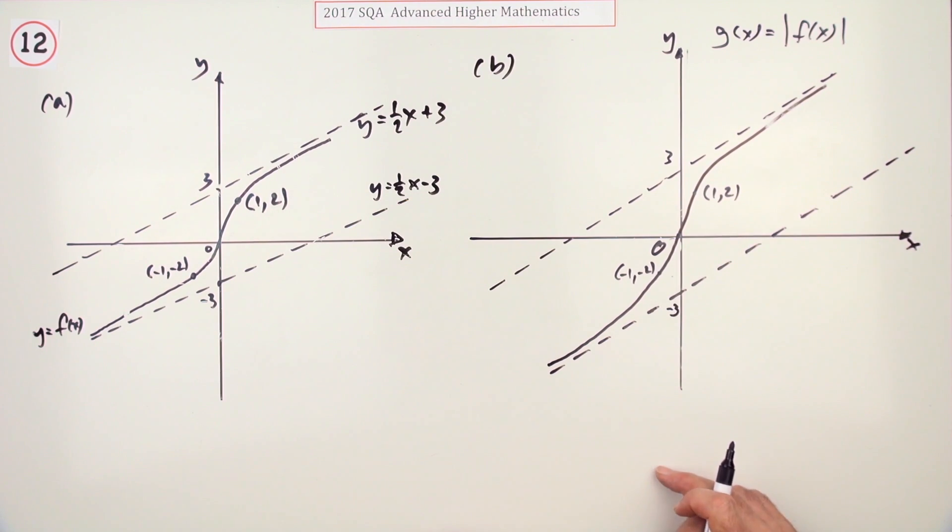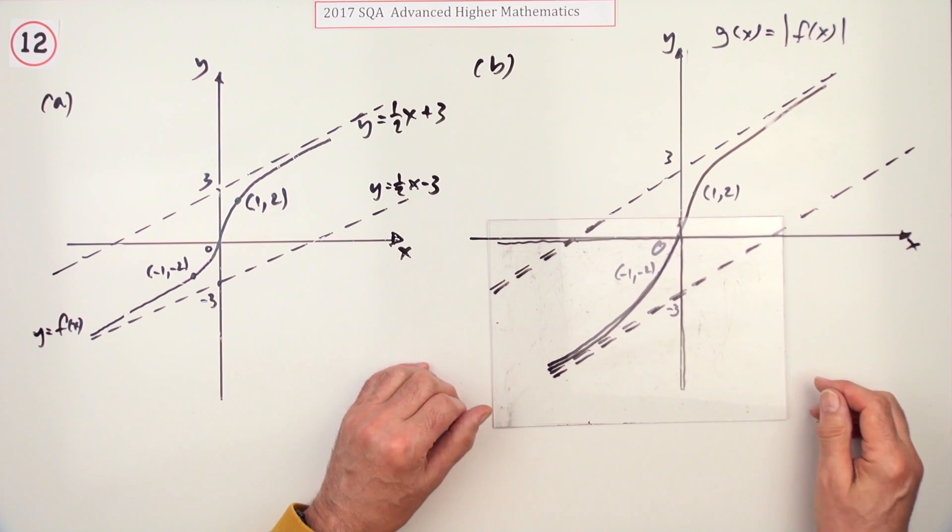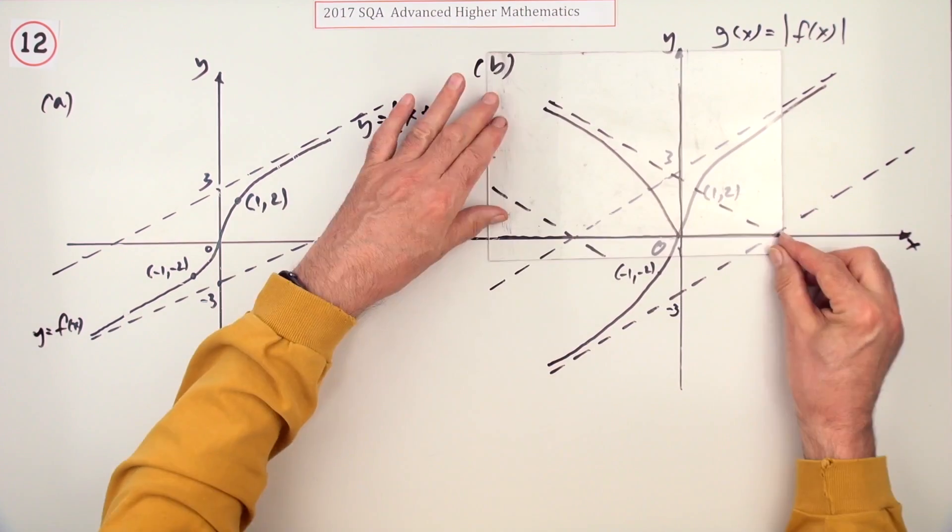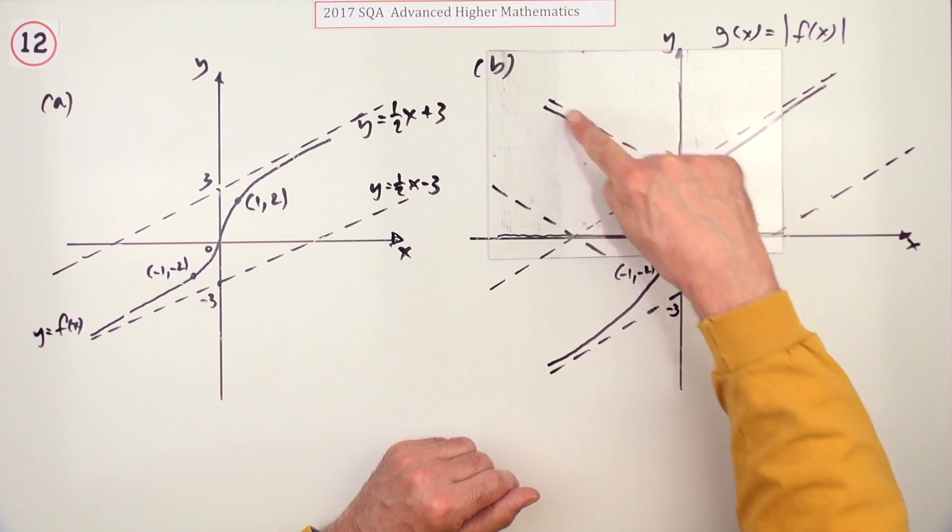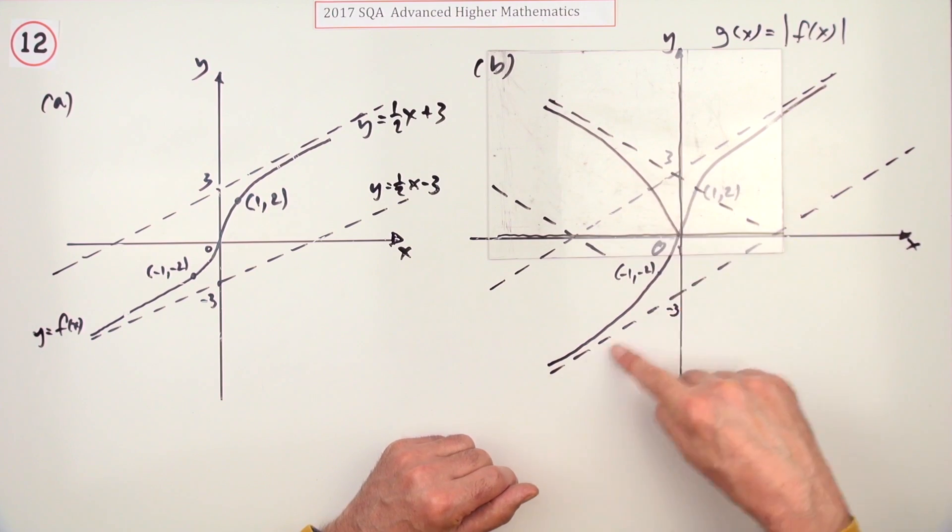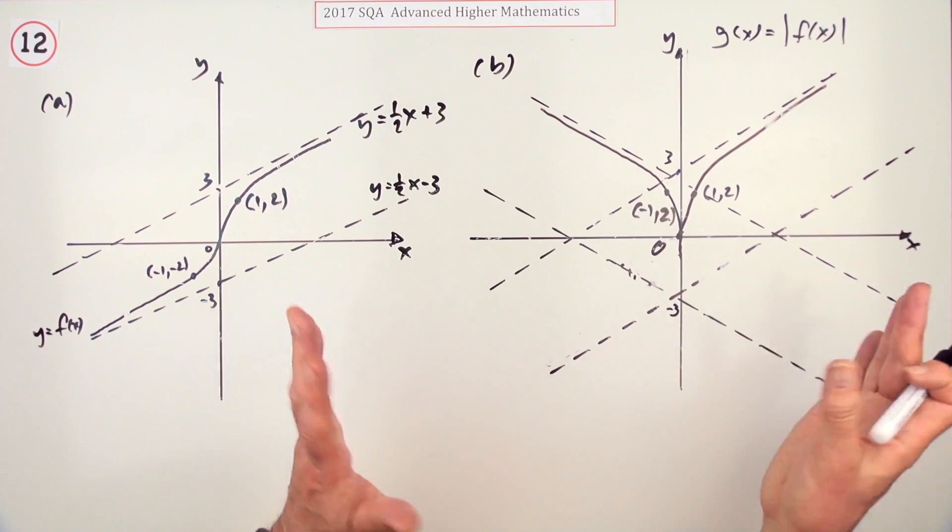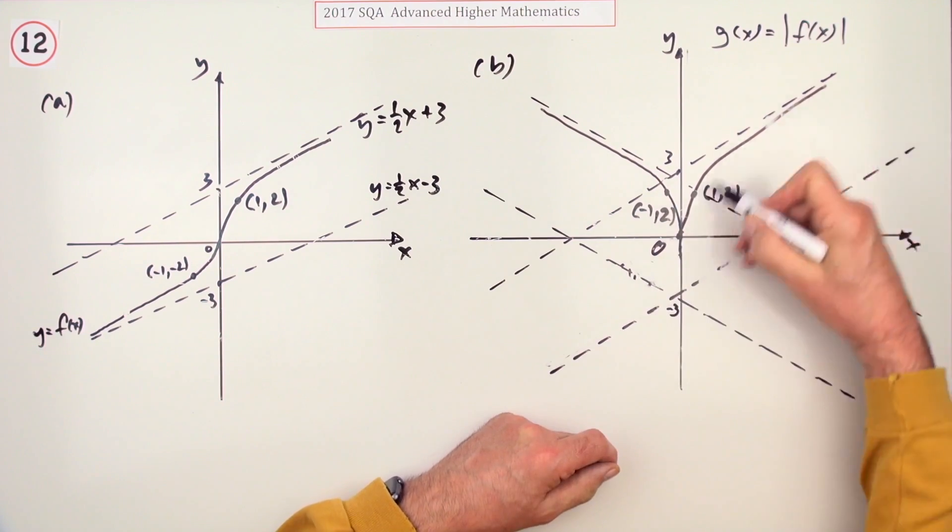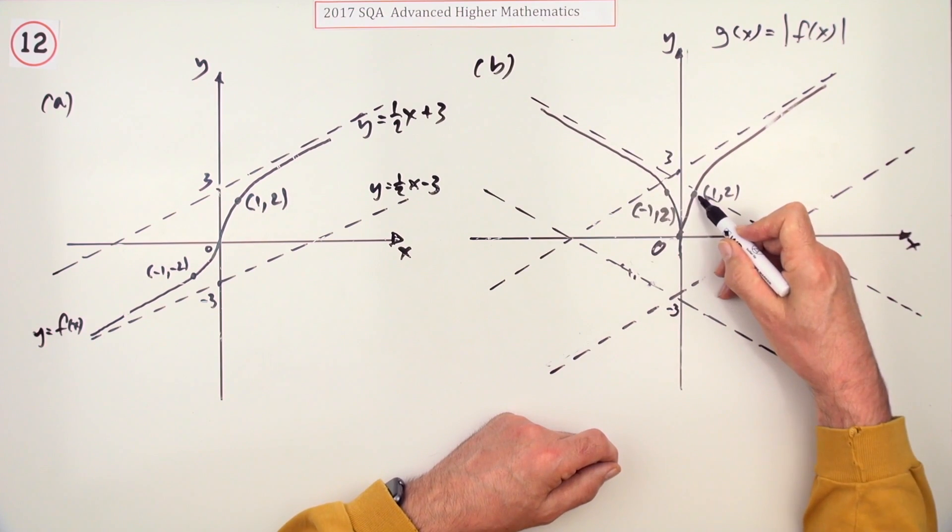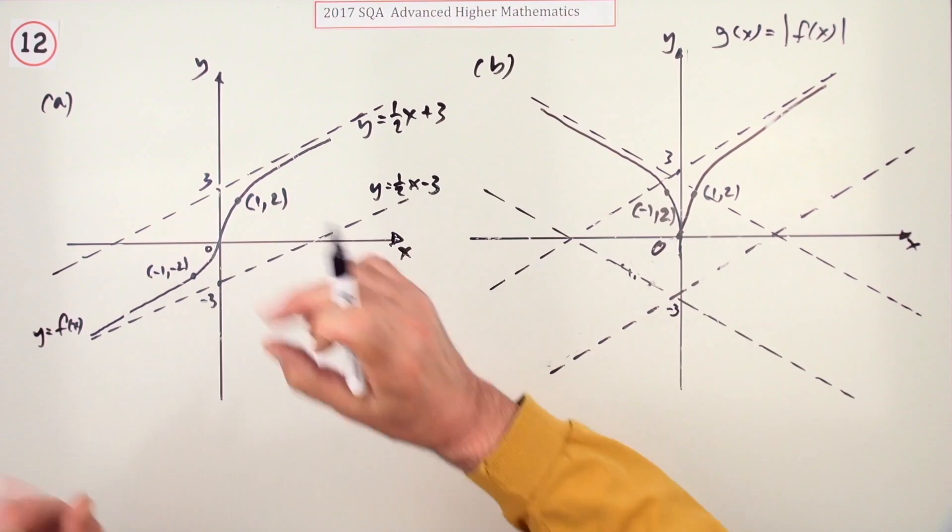Now what happens when you do the modulus: the modulus simply means this part will flip up, so any negative parts become positive for the graph. If that's the original graph and you want the modulus, this would flip up. It's important that boundaries go with it, so this negative part would disappear and the graph would look like this. It still has a boundary though, so this asymptote has to reflect up with it. If it went through (-1, -2), it's now going through (-1, 2) because all the negative parts became positive.